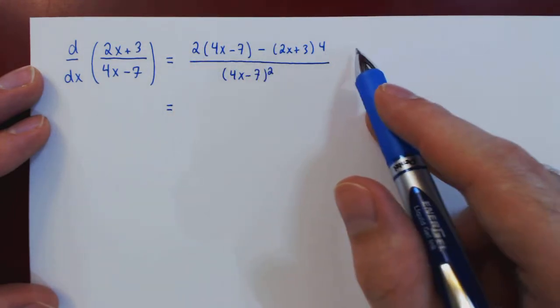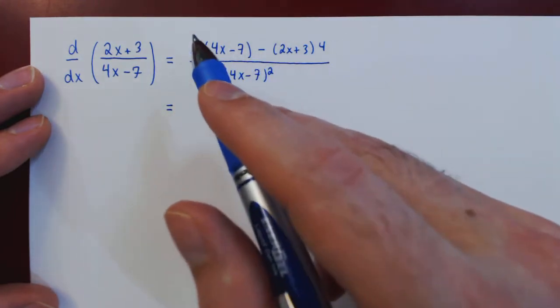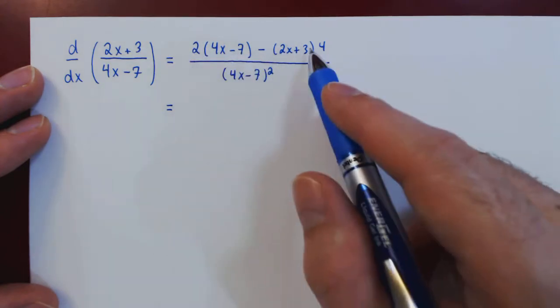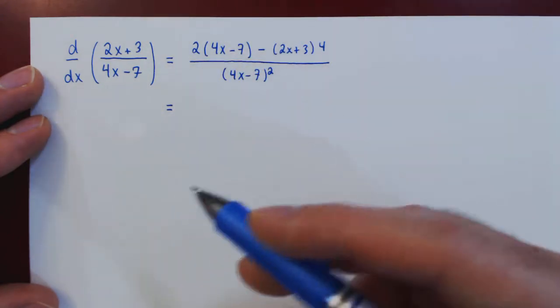Before multiplying things out on the numerator, notice that there is a factor of 2 in each term, so we can factor it out before multiplying things out.